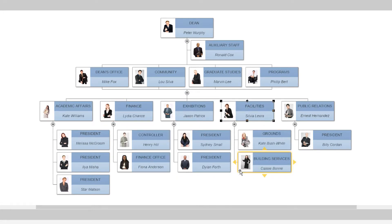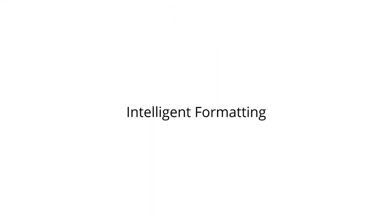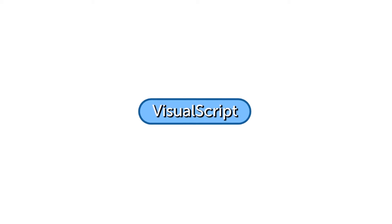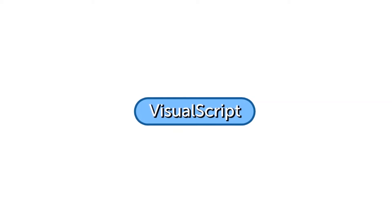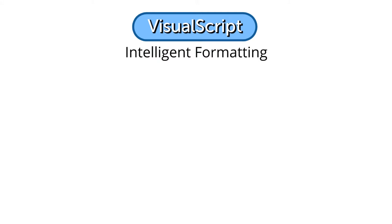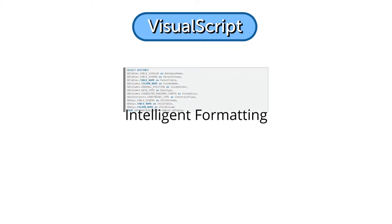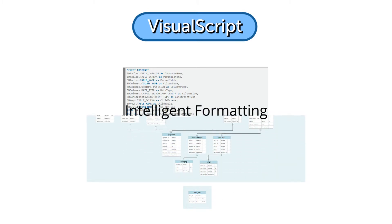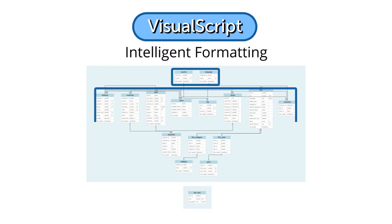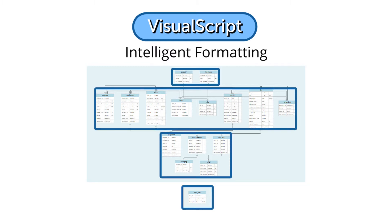SmartDraw uses a markup language based on JSON to translate intelligent formatting into code. This markup language is called VisualScript, and it is the foundation of SmartDraw's Open API. VisualScript leverages intelligent formatting to make specifying a tree or a flow as simple as specifying the parents and children. No positioning information is needed because the intelligent formatting engine knows how to lay them out perfectly on the page.